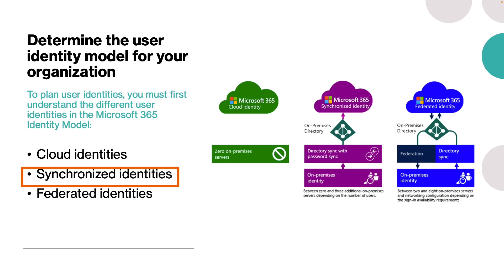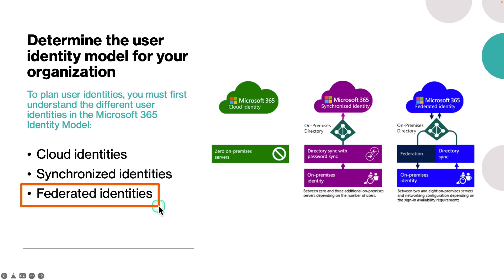Azure AD Connect filters the accounts that are synchronized and determines whether to synchronize the password or not. We will learn about Azure AD Connect in detail in the upcoming session. The last one is Federated Identities. A federated identity is a synchronized user account that is authenticated by Lightweight Directory Access Protocol on ADDS. This authentication process creates a local claims provider trust with Active Directory Federation Services. This federation is complex to install, deploy, and maintain, so you would only do it if you feel it is really necessary.